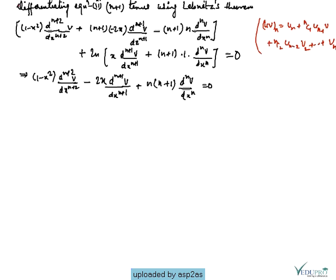Now, differentiating equation 2 a total of (n+1) times using the Leibniz theorem — which you studied in first semester. The Leibniz theorem states: (uv)^(n) = u^(n) + nC1·u^(n-1)·v' + nC2·u^(n-2)·v'' + ... + v^(n). Applying this formula here for (n+1)-times differentiation.